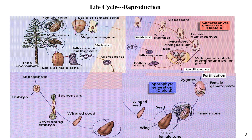Within the ovule at the base of each scale of the female cones, diploid spore-forming cells undergo meiosis, producing haploid spore cells, one of which develops into the female gametophyte. The female gametophyte in turn produces egg cells.